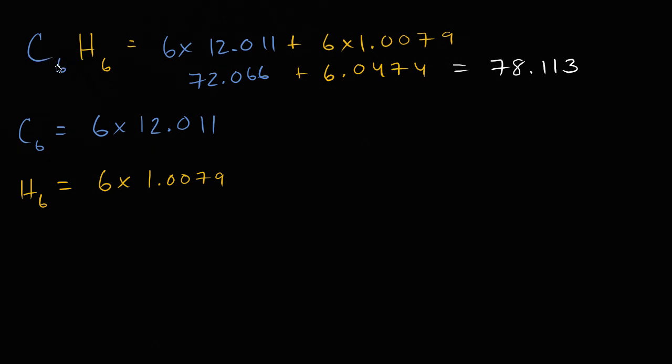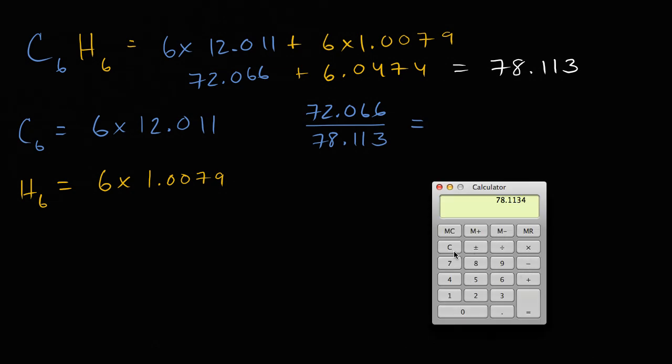So this equals 78.113 atomic mass units. That's the molecular mass of a molecule of benzene. Now what percentage is from the carbon? Well, it's going to be 72.066 over 78.113. Let me just clear this. 72.066 divided by 78.113 equals 0.9225, keeps going on and on.